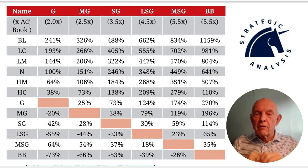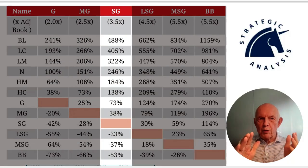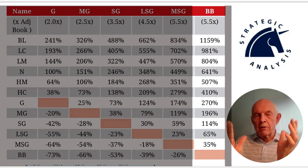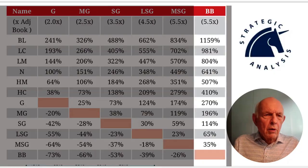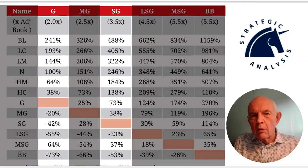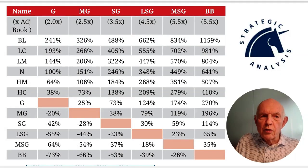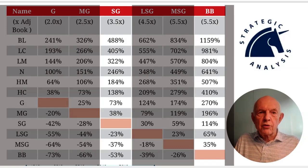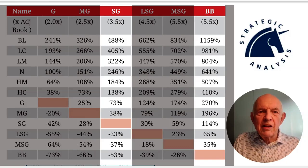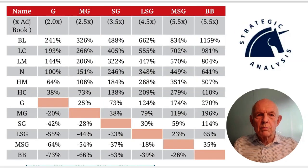Those are the breakpoints between the growth price, which is two times adjusted book value, the super growth price at three and a half times book, and the bubble price at 7.4 times book. The difference between the growth and the super growth is 75%, and from super growth to bubble is more than 100%. We can't have nothing to say across moves of that magnitude — and indeed, there are a couple of very powerful breakpoints in between.